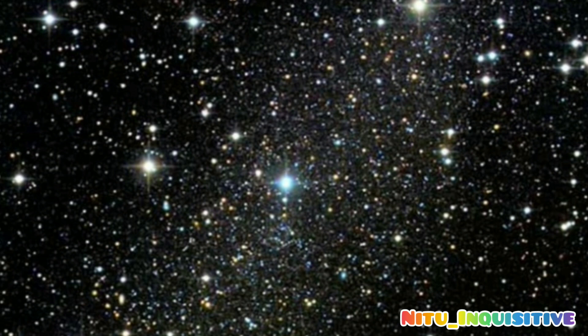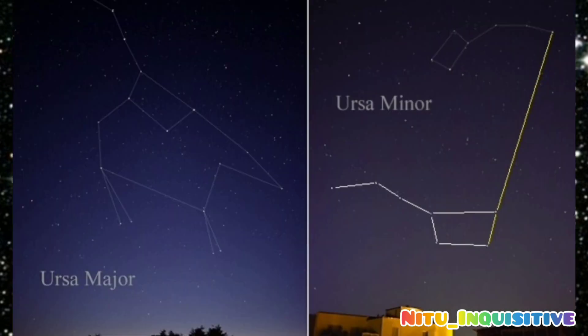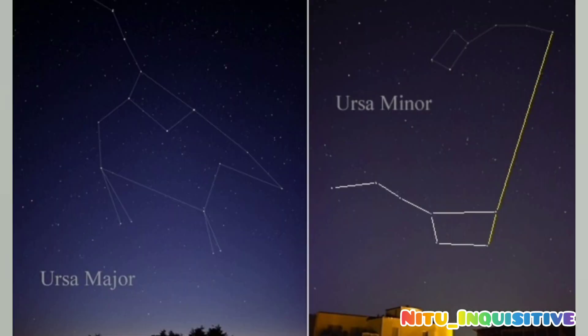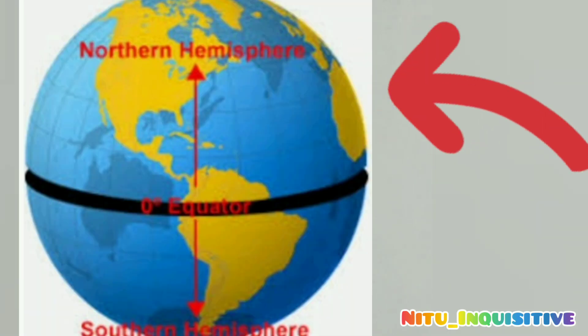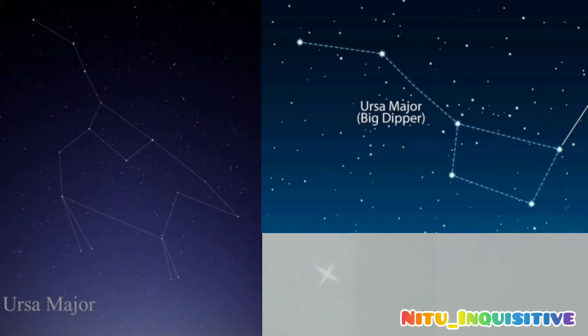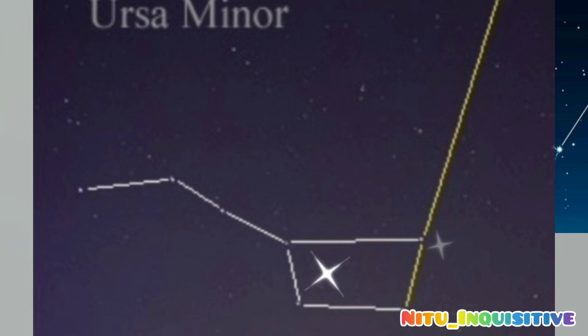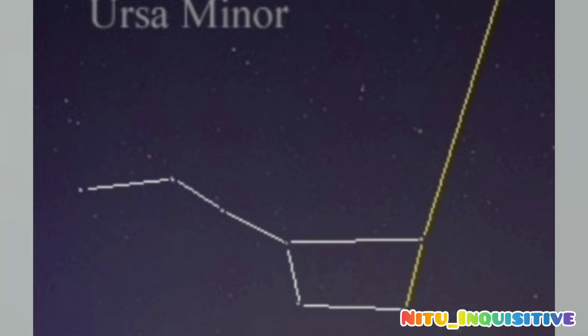Both the constellations, i.e. Ursa Major and Ursa Minor, are found in the Northern Hemisphere. The Indian name of Ursa Major constellation is Saptirishi, whereas Ursa Minor is known as Drupthara, which is also known as Polestar.